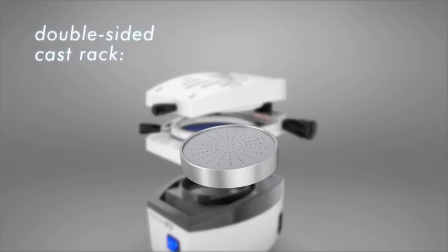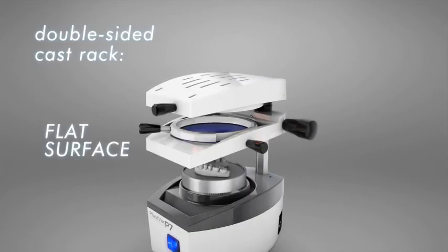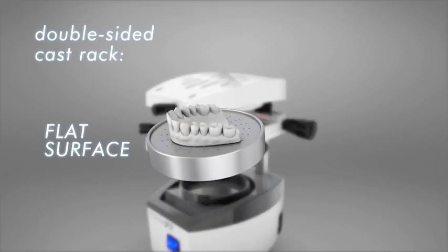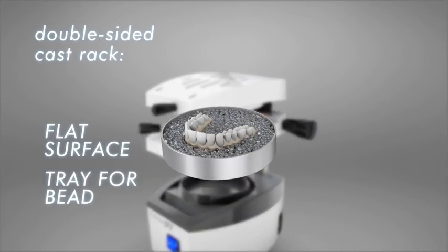It has a double-sided cast rack. The flat surface is indicated for soft sheets and casts with a good finishing. The tray for beads is indicated for hard sheets and non-finishing casts.